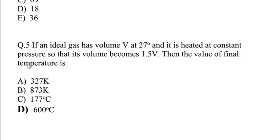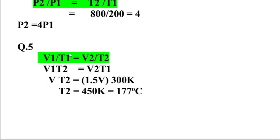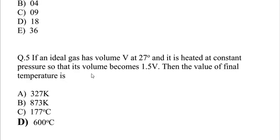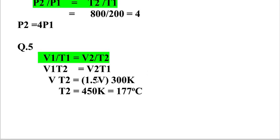You know that at constant pressure, V1 over T1 equals V2 over T2. So T2 equals V2 times T1 divided by V1. V2 is 1.5V, and we need to convert the temperature. 27 degrees centigrade is 300 Kelvin. So T2 equals 1.5V times 300 Kelvin divided by V.